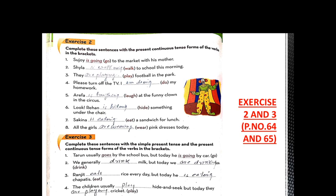Complete the sentence with the simple present tense and the present continuous tense form of the verb in the brackets. First there are two sentences we have to compare. The first one is Taroon usually goes by the school bus, but today he is going by car. The first sentence is simple present and the second one is present continuous. We generally drink milk, but today we are drinking tea. Number third, Ranjit eats rice every day, but today he is eating chapatis. The children usually play hide and seek, but today they are playing cricket.